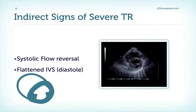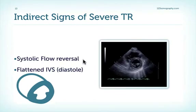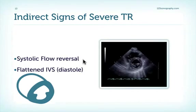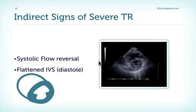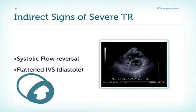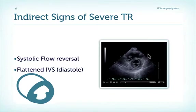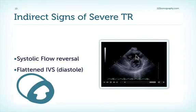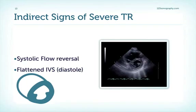Here are some other indirect signs of severe TR. First, systolic flow reversal into the hepatic veins — you can see that both with pulsed-wave Doppler and with color Doppler. If you inject normal right-sided contrast, you can see the contrast regurgitate far into the hepatic veins. Another indirect sign: not only the dilated right ventricle, but also the flattened septum points to volume overload and therefore severe tricuspid regurgitation. Note that the flattening of the septum occurs during diastole — in contrast to pulmonary hypertension, where we have flattening of the septum during systole.